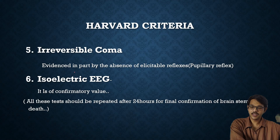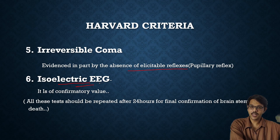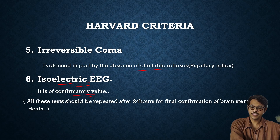Irreversible coma — the person is in a coma stage, evidenced by absent elicited reflexes combined with unresponsiveness. Isoelectric EEG: the EEG, or electroencephalogram, uses electrodes placed on the scalp to measure brain waves. If there is no electrical activity in the brain, the EEG shows an isoelectric — that is, a flat straight line — indicating no brain activity. When these six points are met, Harvard's criteria is satisfied to diagnose brain death.